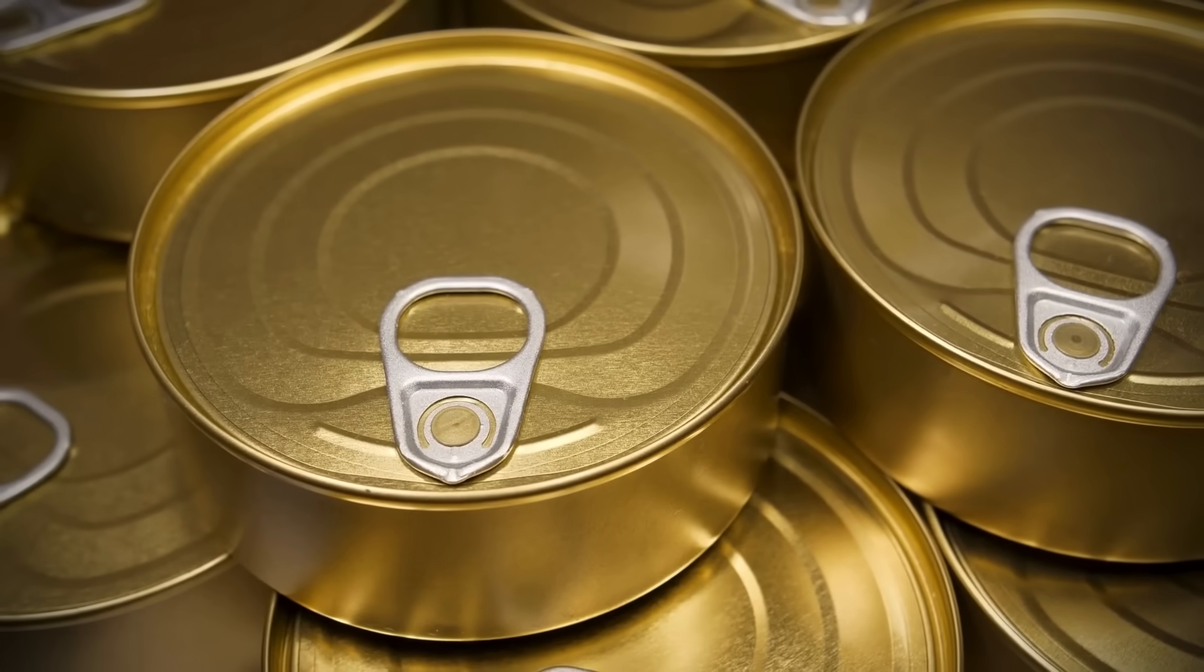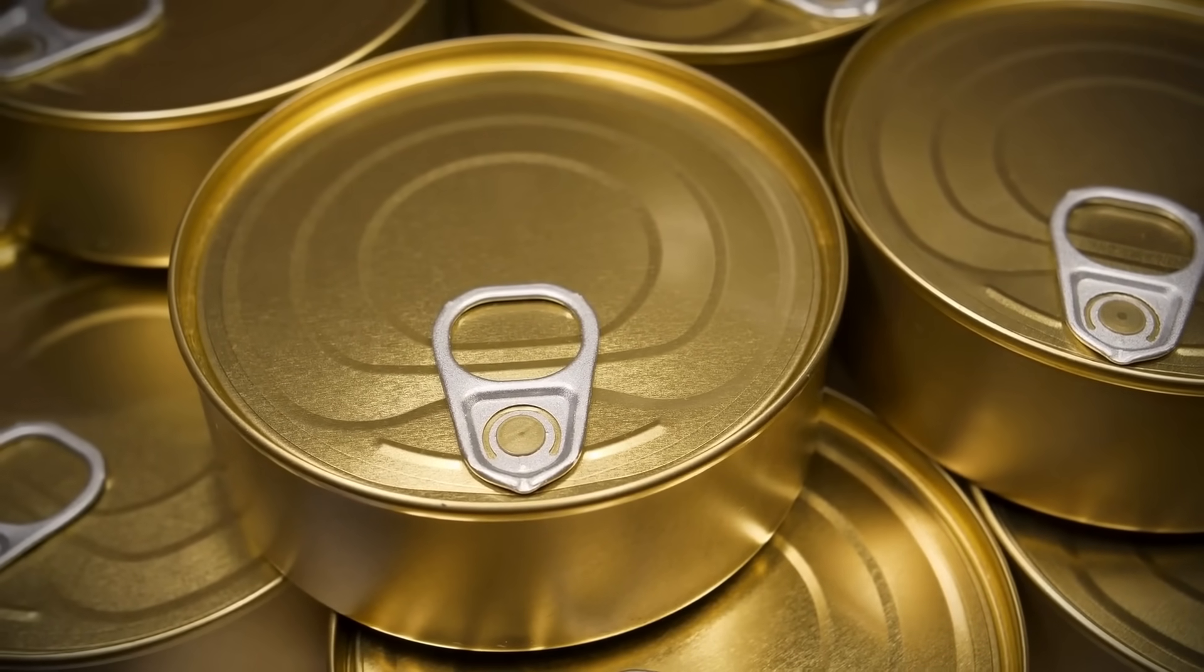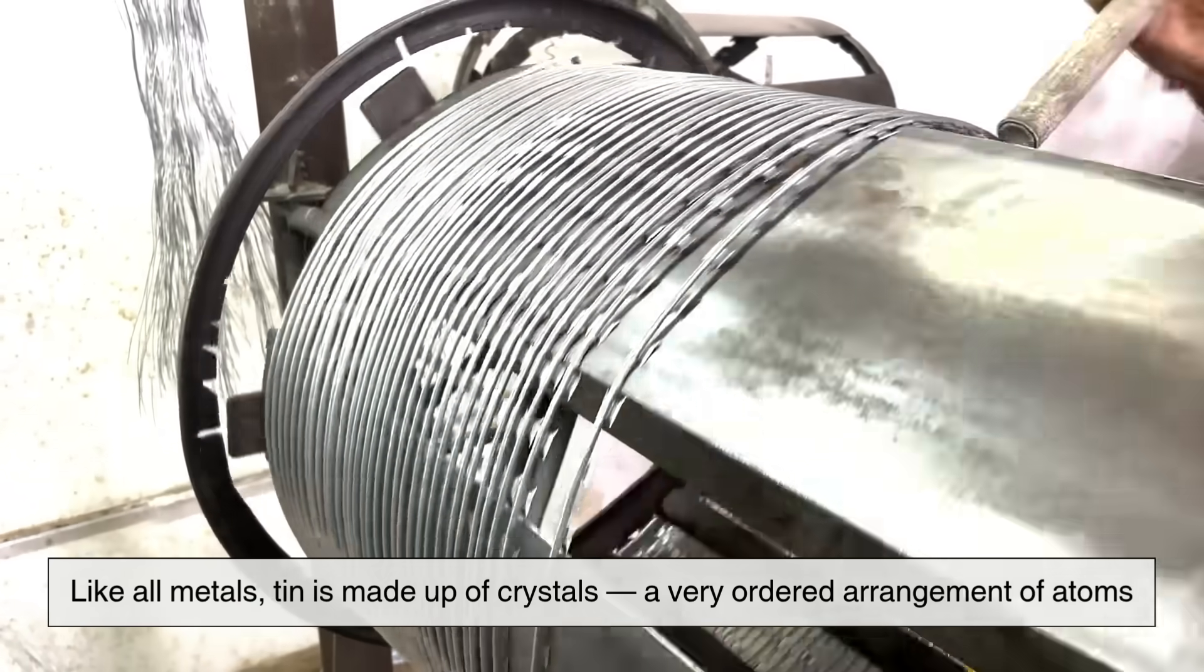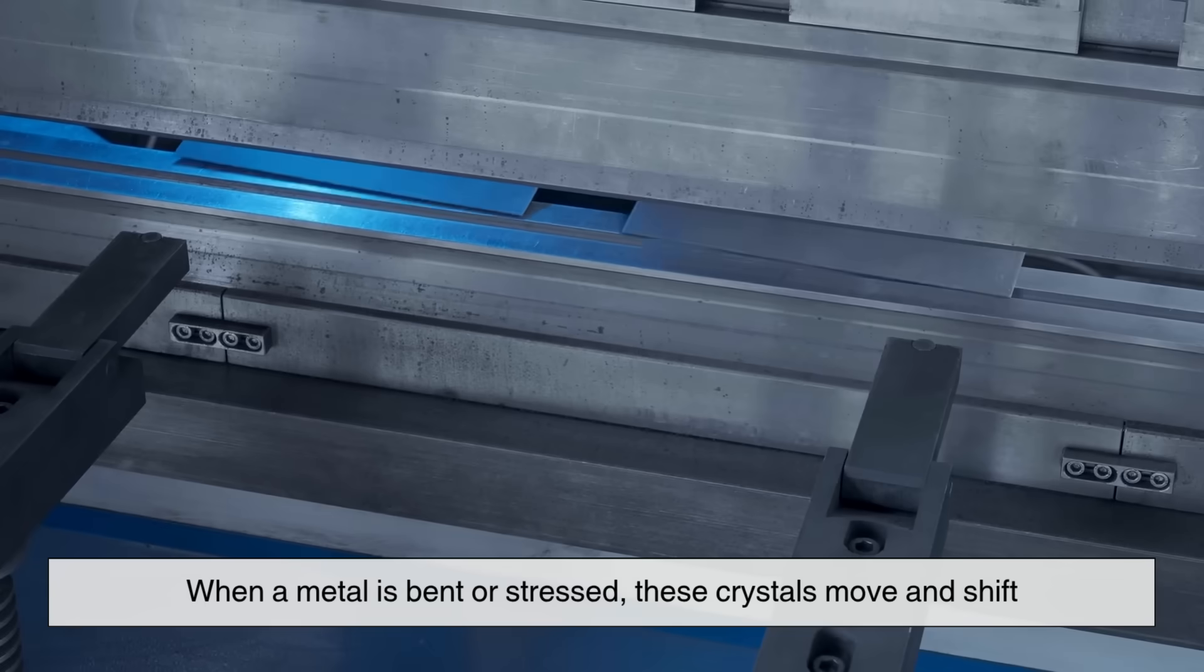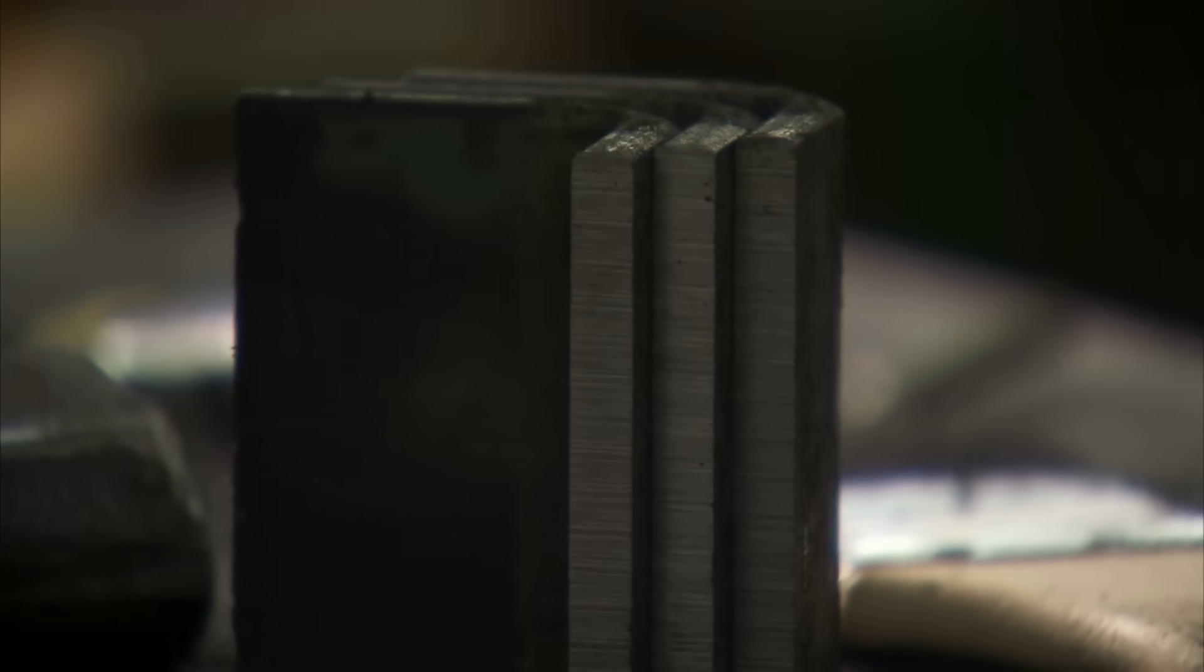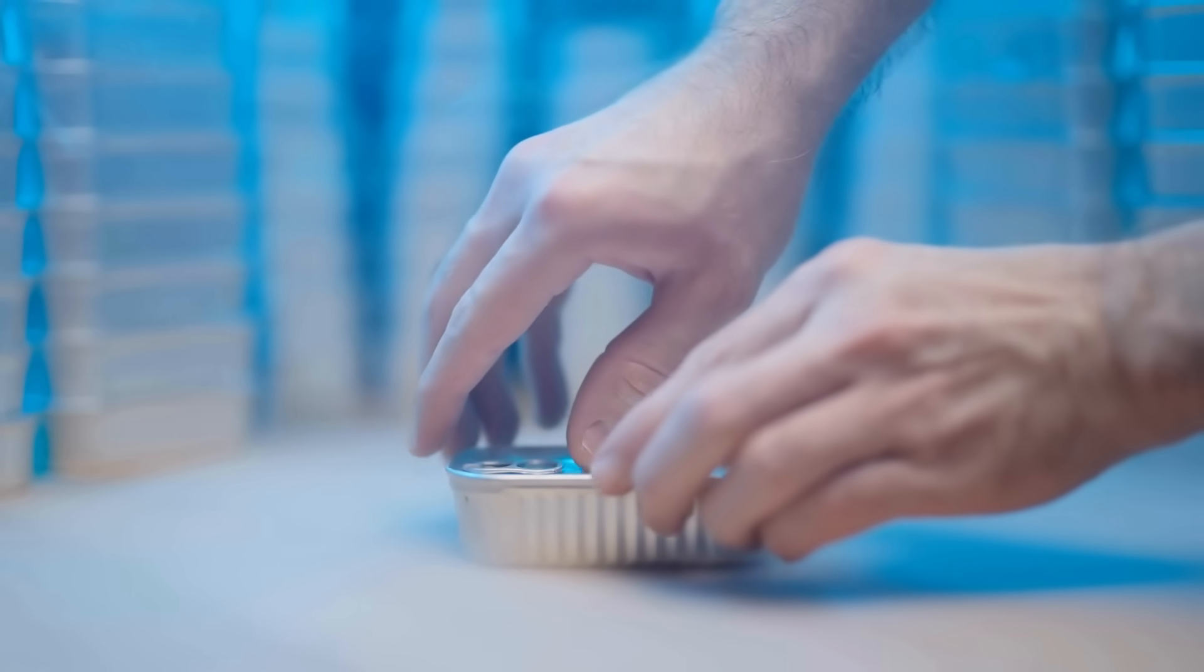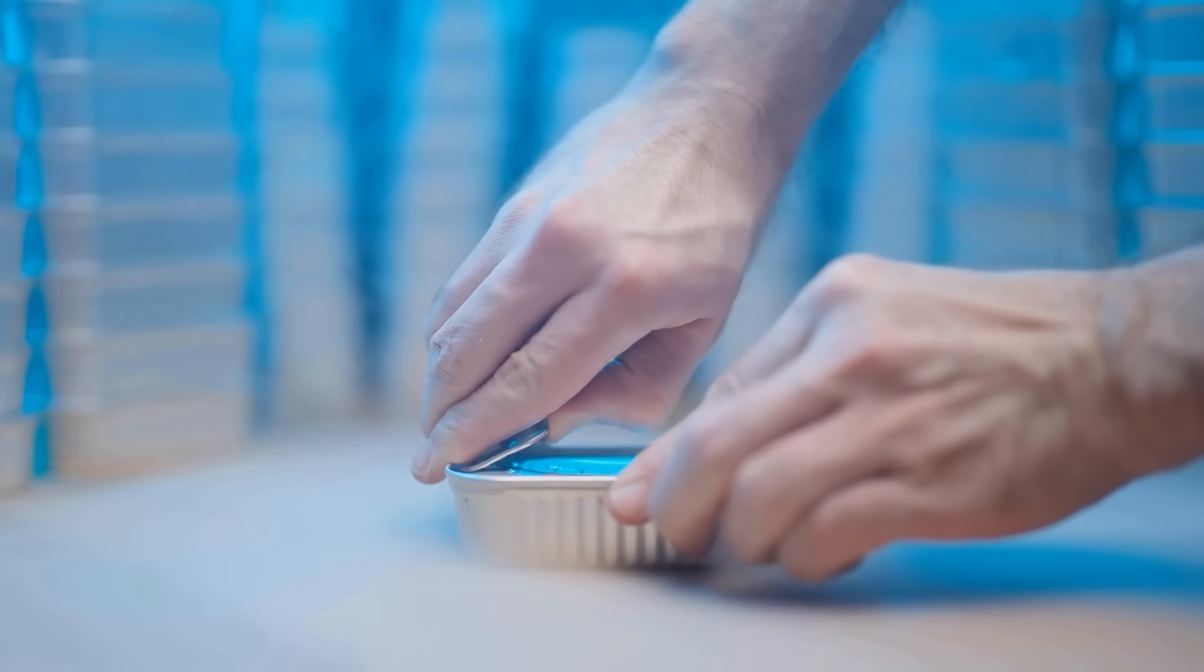To understand why tin makes this sound, we need to look at what's happening on a microscopic level. Like all metals, tin is made up of crystals - a very ordered arrangement of atoms. When a metal is bent or stressed, these crystals move and shift. In most metals, that movement happens quietly. But in tin, the shifting of the crystals, also known as crystal twinning or slip, creates audible vibrations.